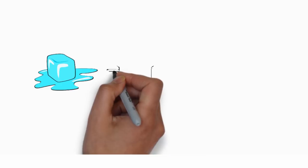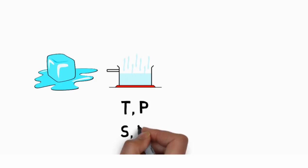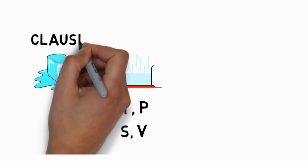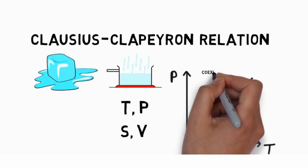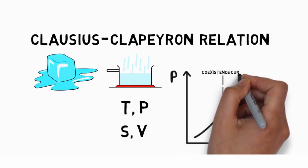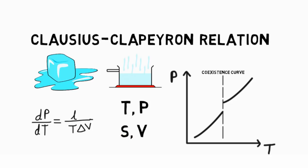During phase transitions like melting, vaporization and sublimation, the temperature and pressure remain constant while the entropy and volume change. The Clausius Clapeyron relation helps in differentiating a discontinuous phase transition between two phases of matter denoted by a coexistence curve on a pressure temperature diagram. It does so by giving the relation between the slope of the tangents to this coexistence curve.